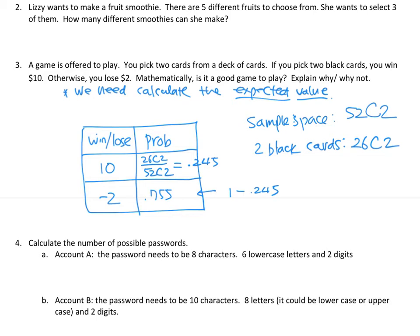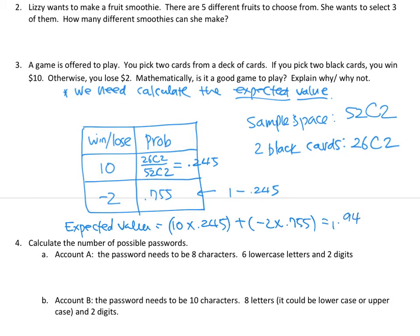To calculate the expected value, multiply each outcome by its probability and sum them: 10 times 0.245 plus (negative 2) times 0.755. That gives 0.94 — a positive number. This means on average you're going to win 94 cents per game. Sometimes you win, sometimes you lose, but averaged over the long term the expected value is positive, so it is a good game to play.